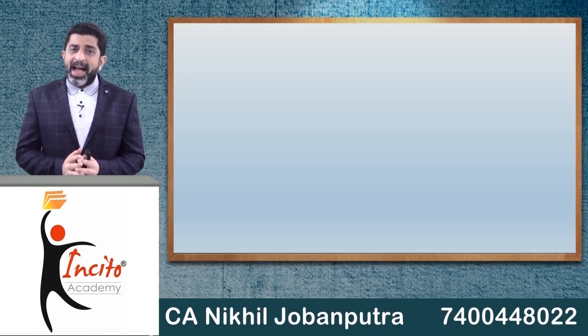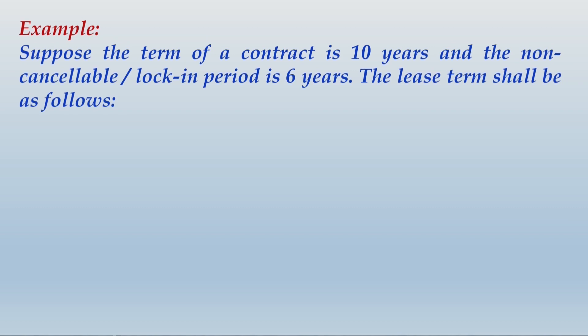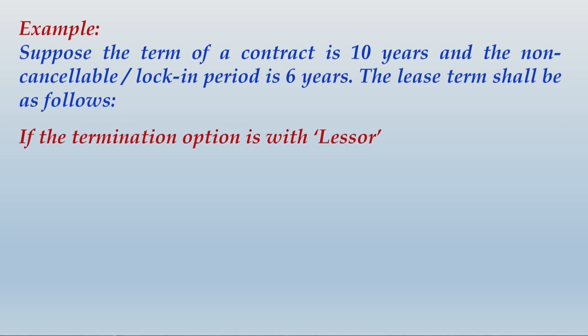Let us go ahead and take some more examples. This example you need not write because it is given in your textbooks the same way. Just focus on understanding. Suppose the term of a contract is ten years and the non-cancellable or lock-in period is six years. If the termination option is with the lessor, the lease term shall be ten years, simply because the contract contains a lease term of ten years where the lock-in period is six years.